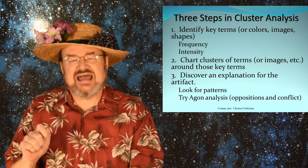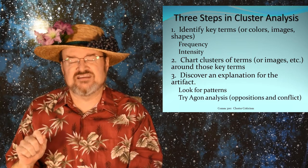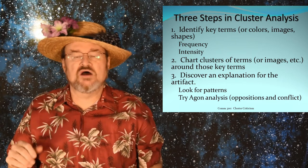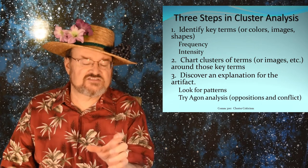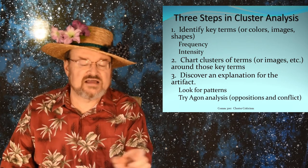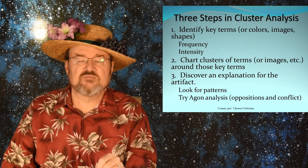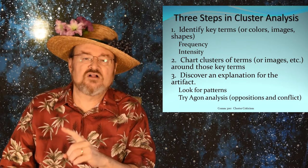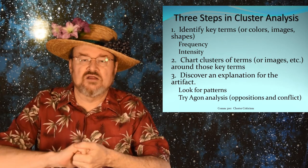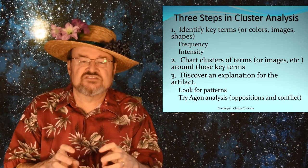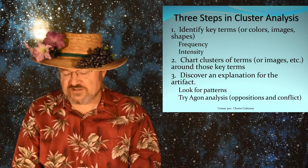Foss talks about agon analysis, and agon is basically conflict. Another possible approach is to not just see what goes with what — what is associated with the key term — but also what goes against what. Are there contradictions in this worldview? Because those can be interesting as well.